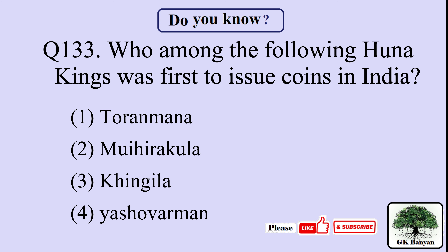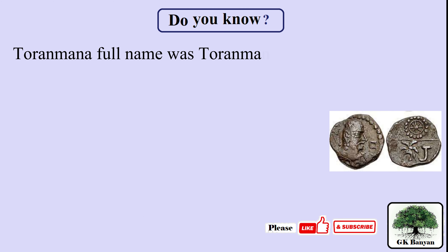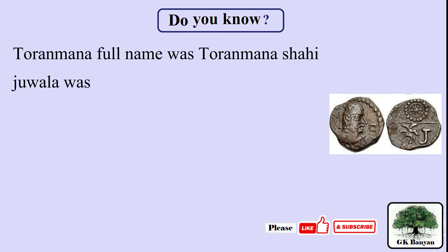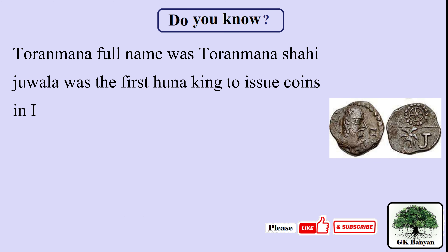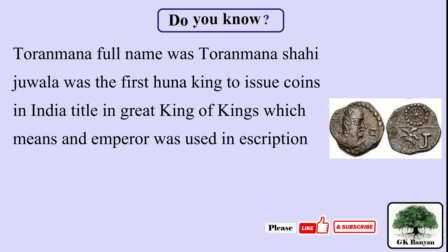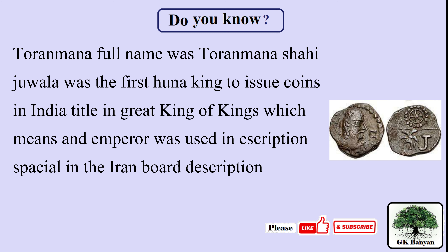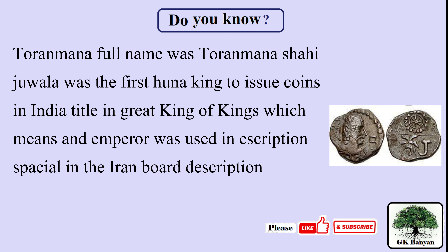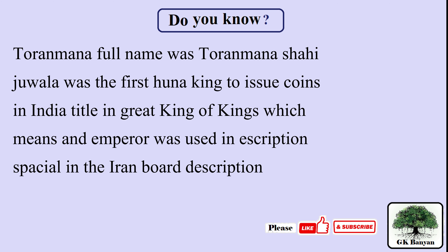The right answer is A. Toramana. Toramana, whose full name was Toramana Shahi Jawla, was the first Huna king to issue coins in India. The title 'Great King of Kings,' meaning emperor, was used in his inscriptions, especially in the Eran board inscription.